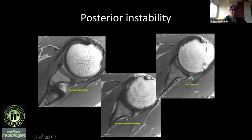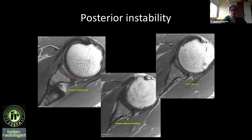When you see a labral tear, it's not enough to just call it a labral tear — look for the cause. Here I can see osseous remodeling at the posterior inferior glenoid. Combined with a posterior labral tear and a lax capsule, all three together should prompt you to ask the surgeon to assess for posterior instability. Look at the pattern.